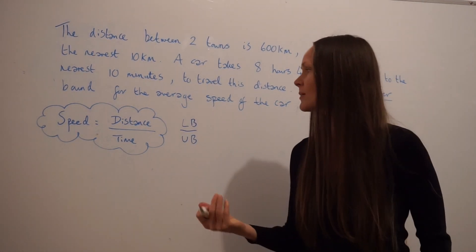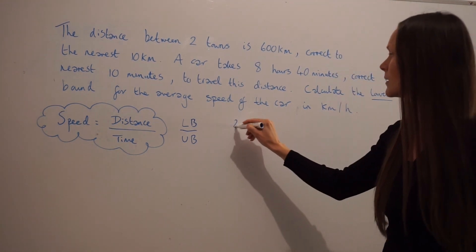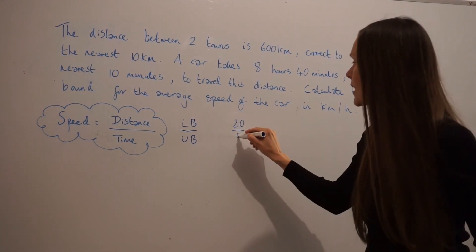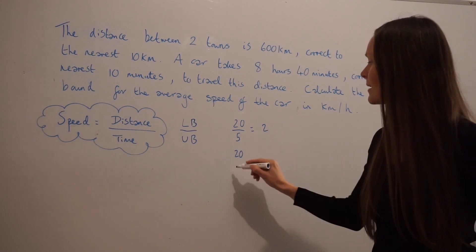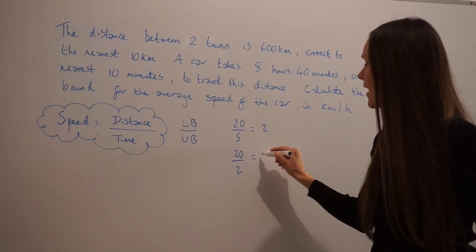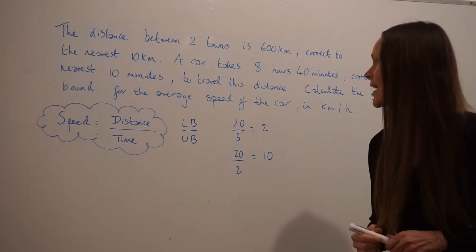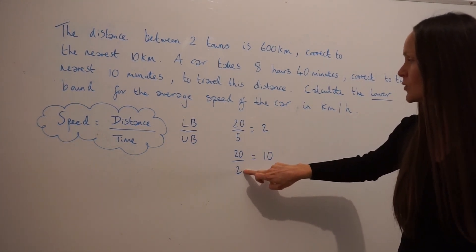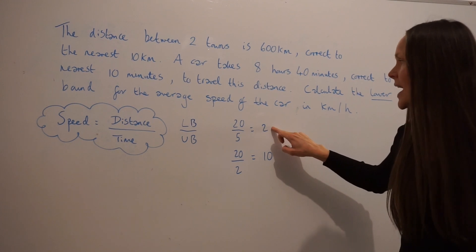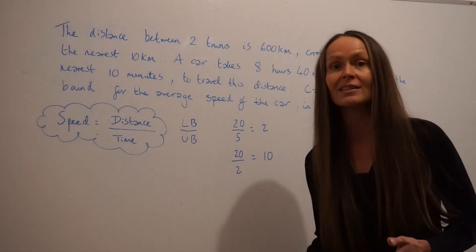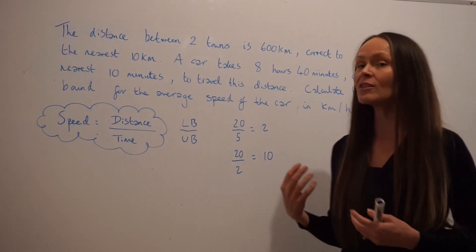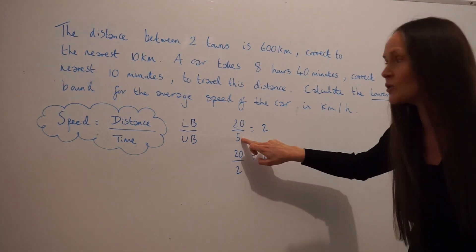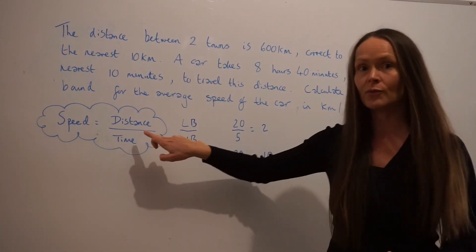We're dividing by the largest possible time. I'll show you again with those numbers from earlier. If I take the number 20 and I divide by 5, I get 2. If I divide the same number 20 by 2, I get 10. Can you see that when I divide by a bigger number — because 5 is bigger than 2 for the denominator — I get a smaller answer. And remember, we're working out the lower bound for the speed, the smallest possible speed. So to get the smallest result, we need to divide by the largest possible number, i.e. the upper bound for time. So it's the other way round compared to the previous question.